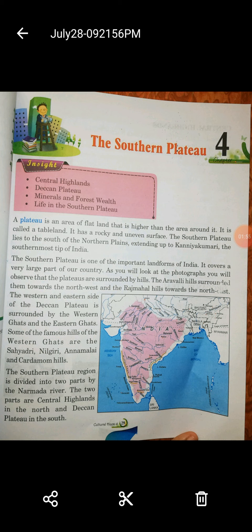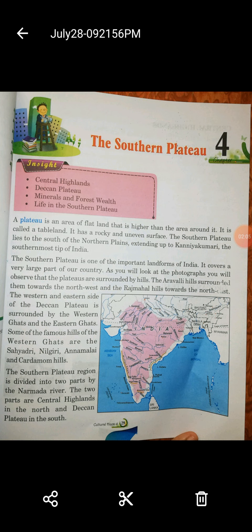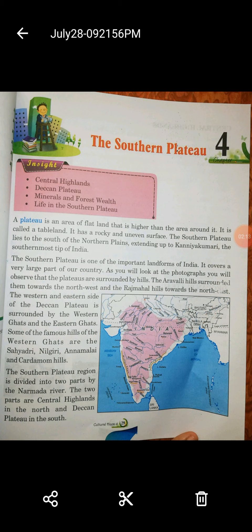As you look at the photographs and the map, you will observe that the plateaus are surrounded by hills. आपको देख रहा है कि these plateaus are surrounded by many hills. The Aravali hills surround them towards the Northwest — in the states of Rajasthan, you will see the Aravali hills. So, the Aravali hills surround it towards the Northwest.